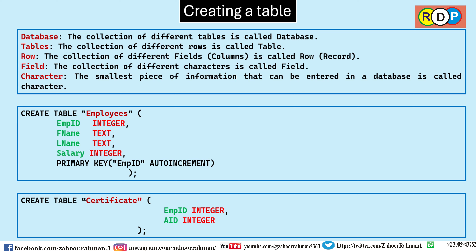Hello and welcome to Rahman Digital Production. In today's lecture we are going to create a table through SQL command, but before that let us discuss few terminologies associated with the database. The first one is database — the collection of different tables is called a database. For example, one table of employees, the second one of customers, the third one of products — combined they generate a database.